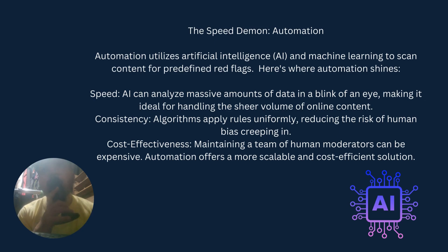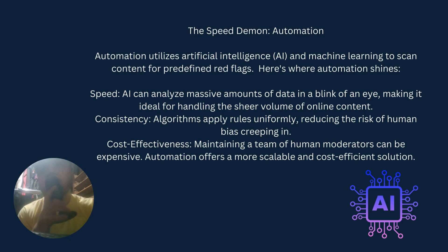It also deals with self-harm content, as it can identify certain hashtags people use especially with self-harm challenges posted on the internet. It's very fast and can analyze massive amounts of data in a blink of an eye, making it ideal for handling the sheer volume of online content. Once it learns the pattern of those contents, it can automatically flag the data as violating. It is very consistent and applies the rules uniformly without subjectivity, reducing the risk of human bias.